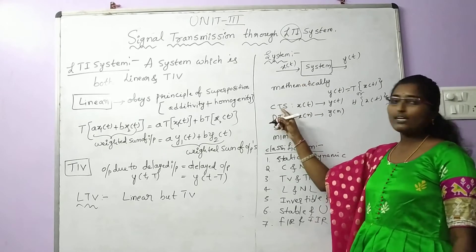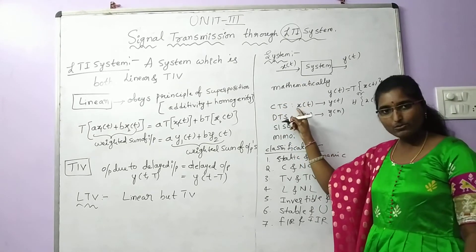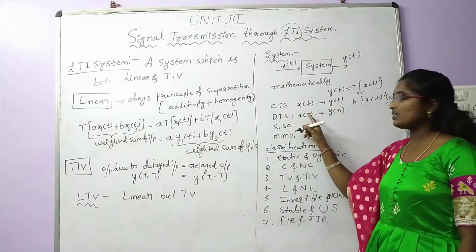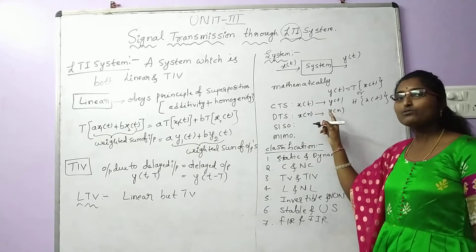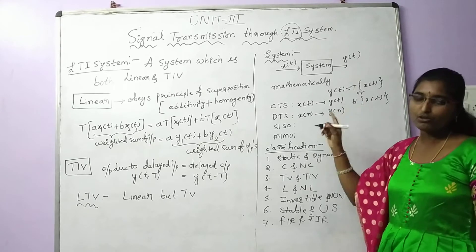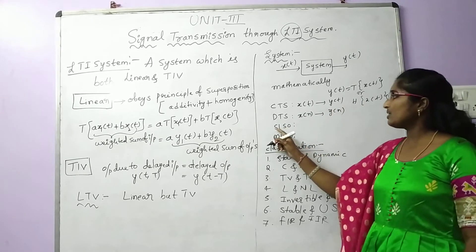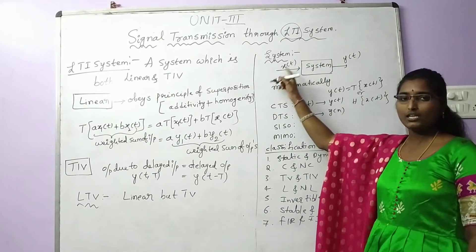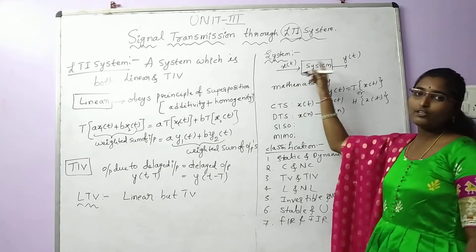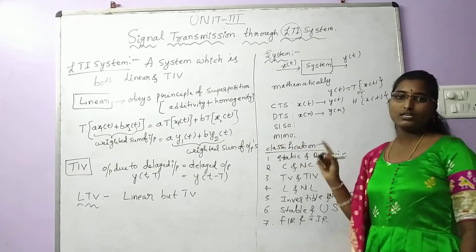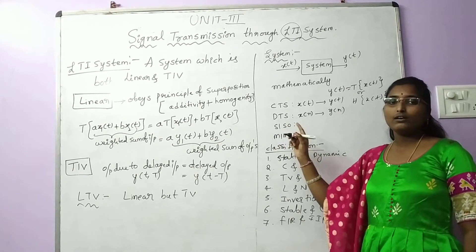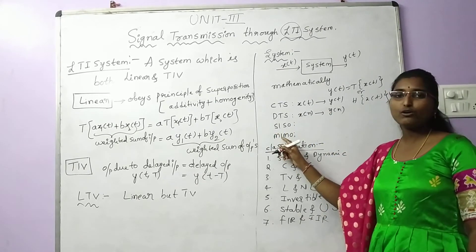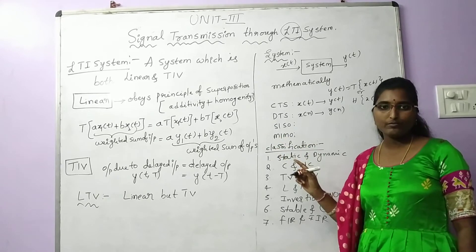Based on that, a continuous time system means your input signal is a continuous time signal and it also produces a continuous time output. A discrete time system takes a discrete time input and produces a discrete time output. A single input, single output system takes one input and produces one output. A system may also take two or more inputs — that is multiple input and multiple output.